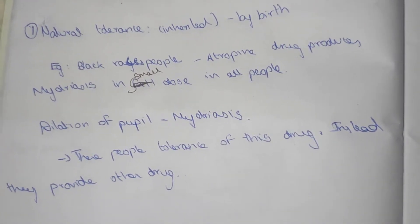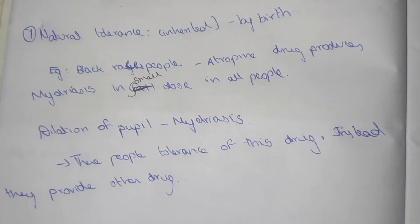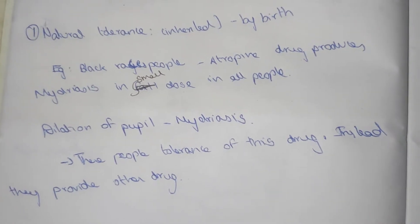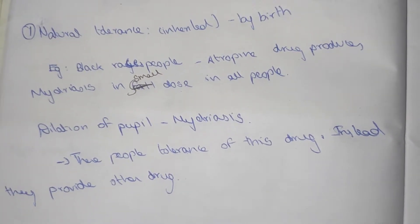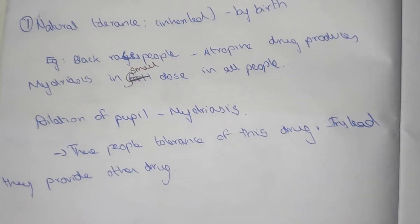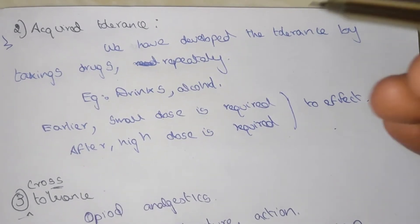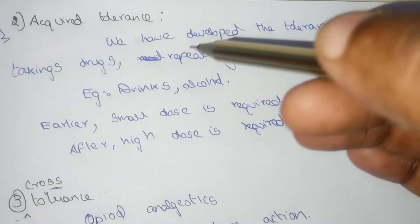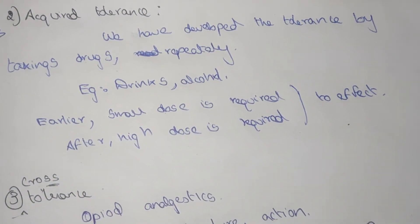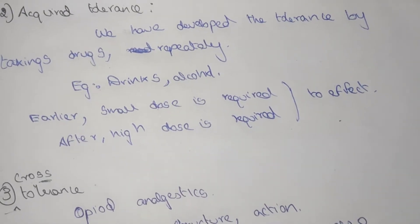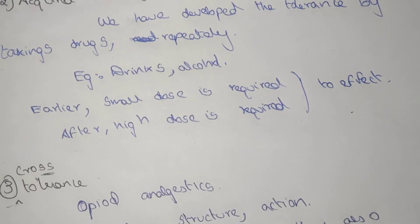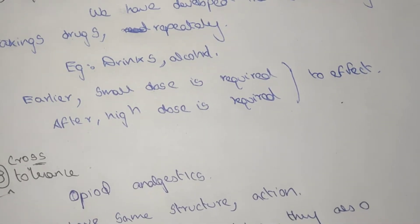This is natural tolerance because it is not acquired by doing something, but it is inherited into the body at birth itself. Now, acquired tolerance — we develop tolerance by taking drugs repeatedly. When we take a particular drug repeatedly, the body develops a tolerance against the drug.